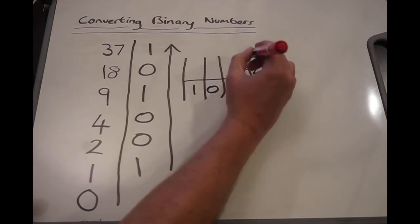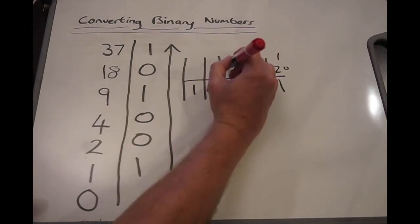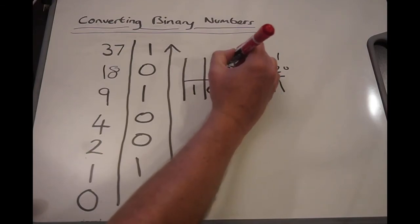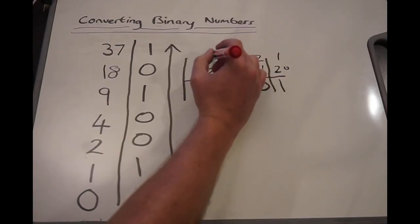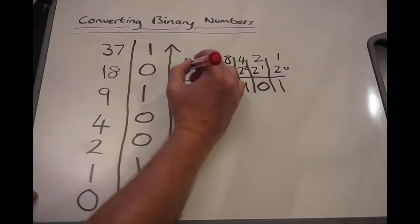This is 2 to the power of 2, which is 4. This is 2 to the power of 3, which is 8. This is 2 to the power of 4, which is 16. And this is 2 to the power of 5, which is 32.